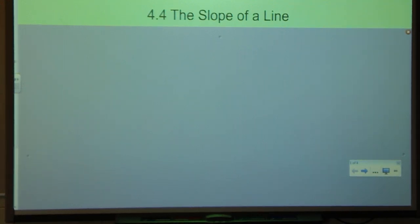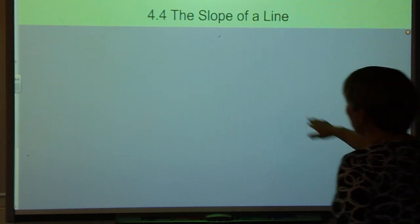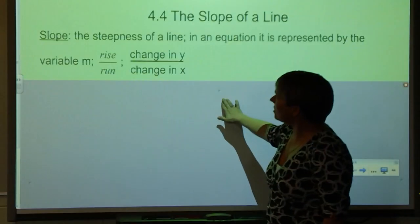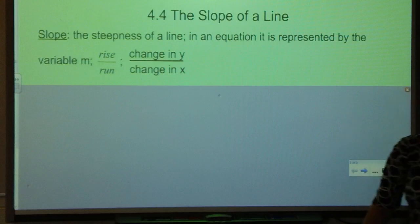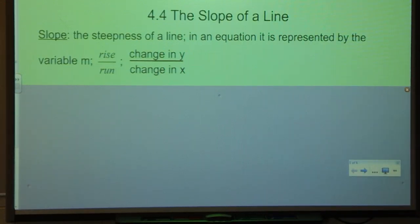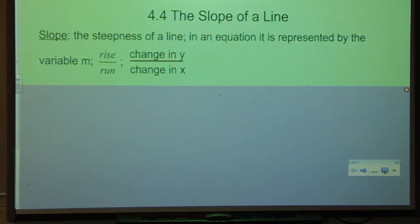Remember from last year your definition of slope is the steepness of a line. In an equation I might see that slope represented by the variable m. You remember slope mostly as rise over run, but it may be helpful going forward if you think of slope in terms of change in y over change in x since that is what we're doing when we calculate the slope.